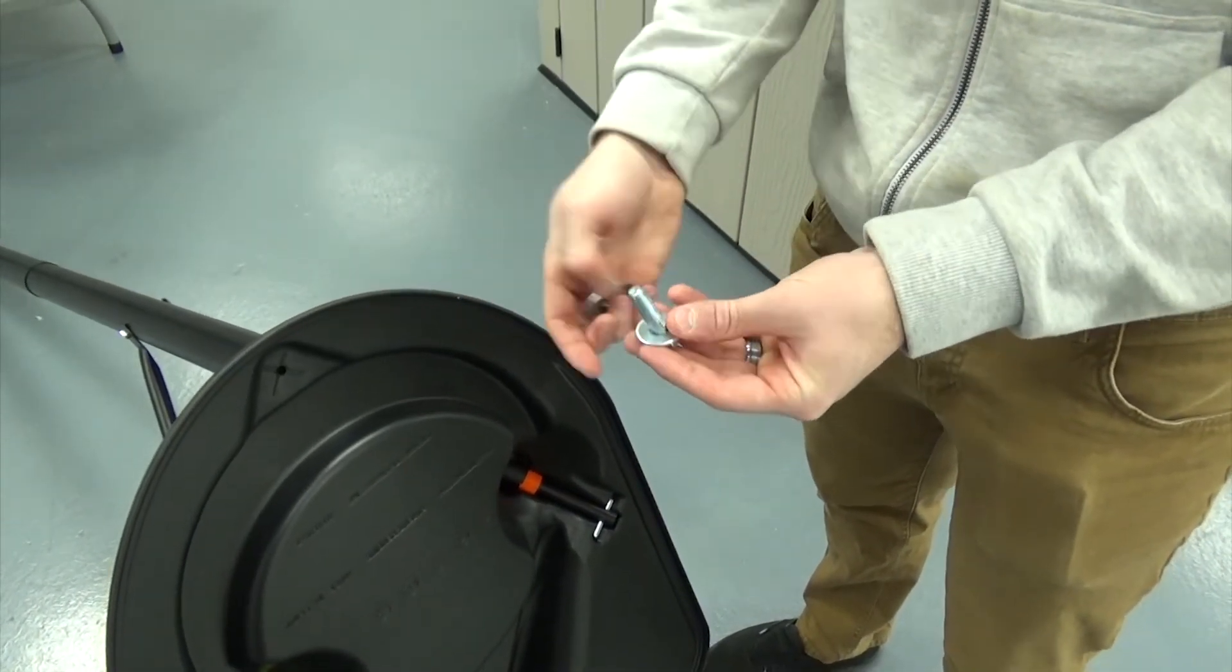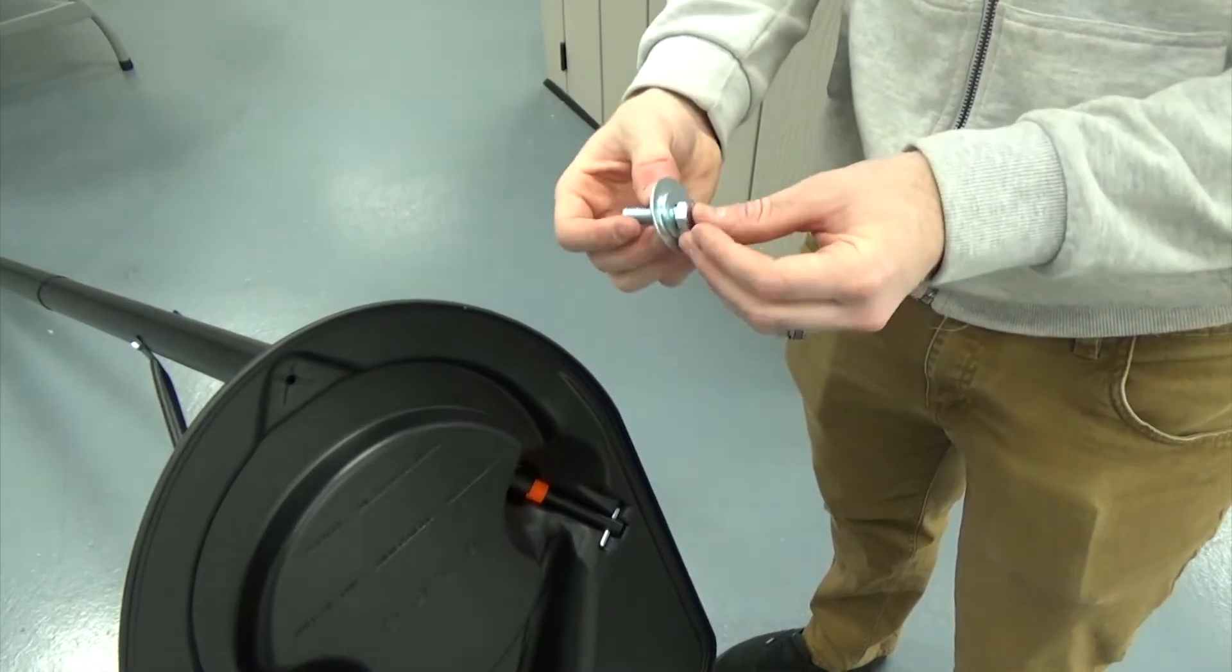Now secure the pole assembly to the underside of the base, then tighten any loose hardware before moving on.